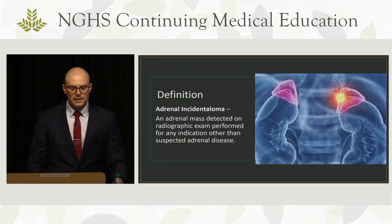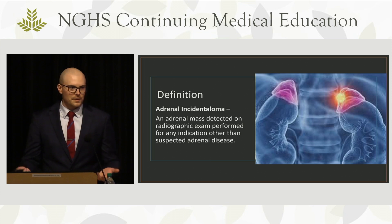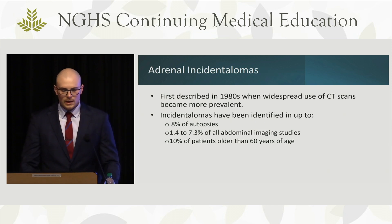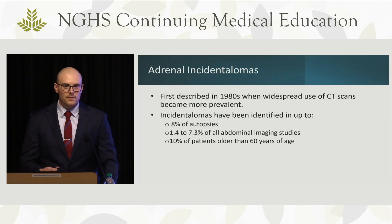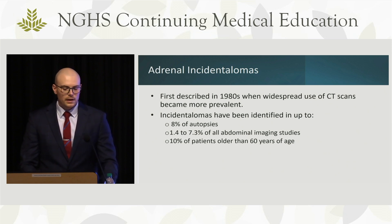An adrenal incidentaloma is a mass detected on any radiographic image performed for an indication other than suspected adrenal disease. A very common way we'd see this: a patient comes in as a trauma, they get pan-scanned, and you find a lesion. Since the 1980s, CT scans have become more prevalent, and their widespread use has definitely increased the identification of incidental lesions of various organs. Specifically for adrenal incidentalomas, 8% of autopsies will show these lesions, and 1 to 7% — with most studies saying around 4% — is how prevalent these are on imaging studies.